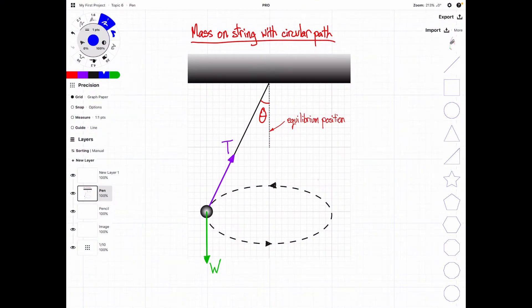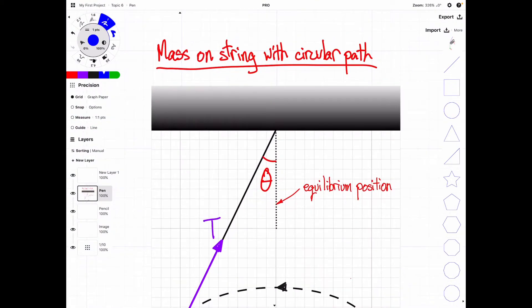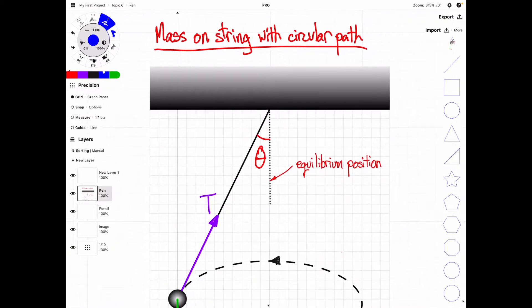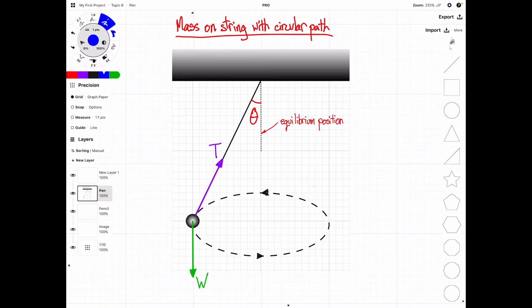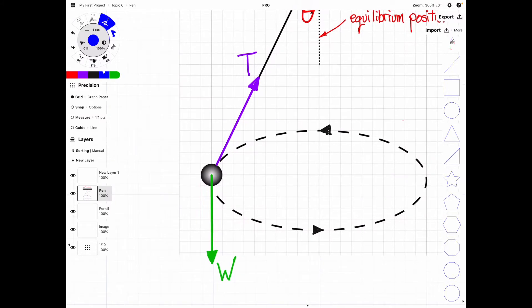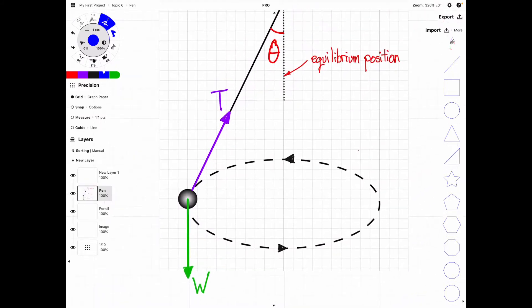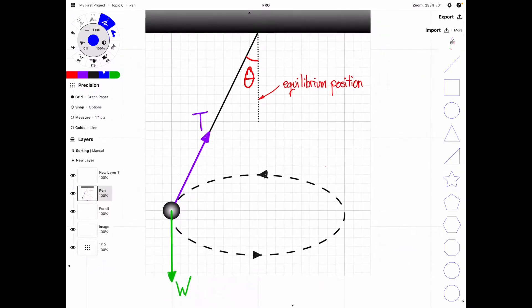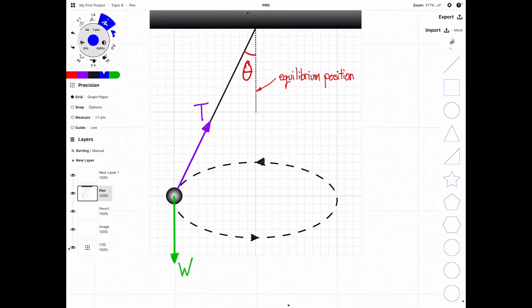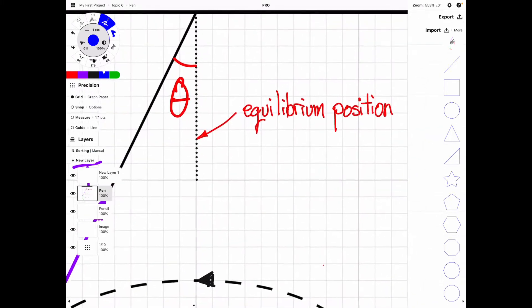Here we have a mass on a string and the mass is on a circular path, not the string. This is all you need to know for a free body diagram for a mass on a string with a circular path. We have two forces here: weight and tension. The angle is also important as you're going to see later, and we measure the angle from the equilibrium position.